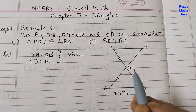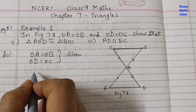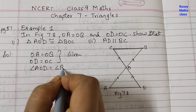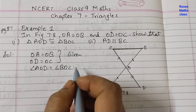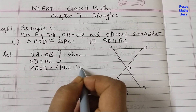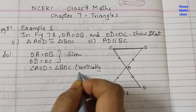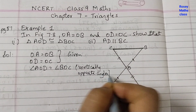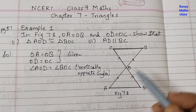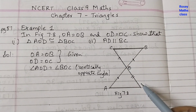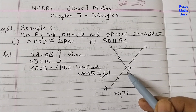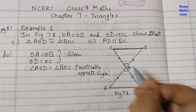Since angle AOD and angle BOC form a pair of vertically opposite angles, angle AOD is equal to angle BOC. The reason you can write is: vertically opposite angles. Whenever two lines intersect — like here AB and CD intersecting — the angles formed are vertically opposite angles and are always equal.